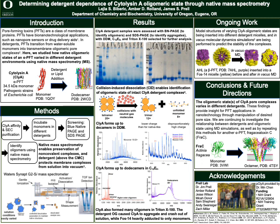To begin our investigation, we purified ClyA and then incubated it in different detergents. These detergent samples were screened using two types of polyacrylamide gel electrophoresis. High molecular weight bands in blue native PAGE indicated potential oligomers, and SDS-PAGE was used to identify aggregates. Using the results from the two gels, we identified DDM, C12E8, and Triton X100 as possible detergent candidates for obtaining ClyA oligomers.